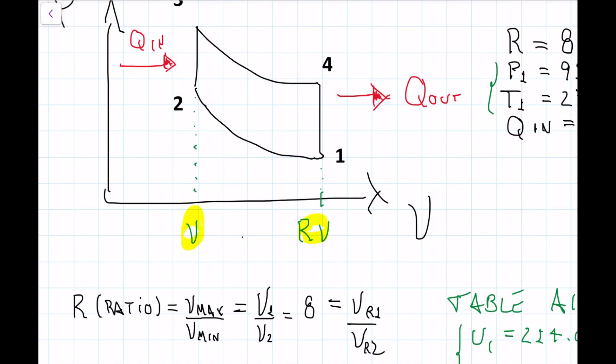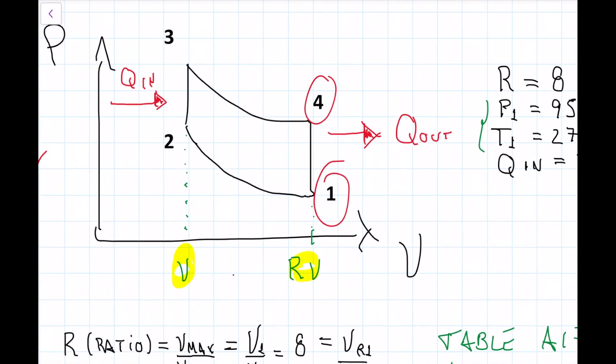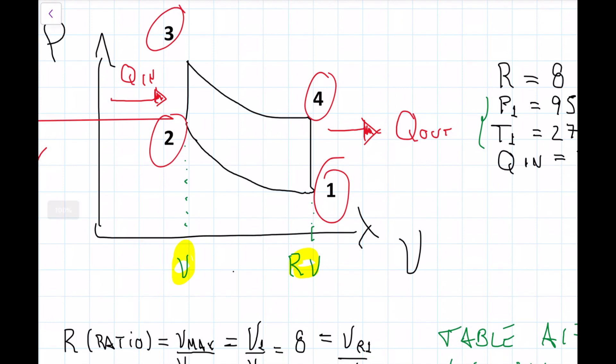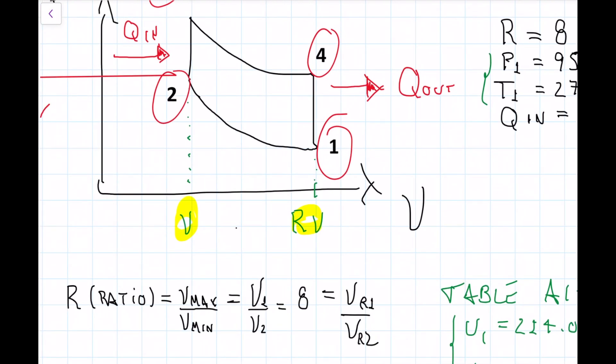This is going to be particularly useful when we're solving this. Also useful to note that my volume 1 and my volume 4, so my volume 1 and 4 are the same, right? Because it's isovolumetric. Likewise, my volume 2 and 3 are the same. So when we talk about the maximum volume, like we're doing here on this part here, this can be either my volume 1 or my volume 4. It doesn't matter because they're the same. And my minimum volume can be either 2 or 3. It doesn't matter because they are the same.